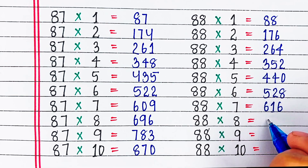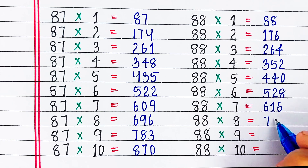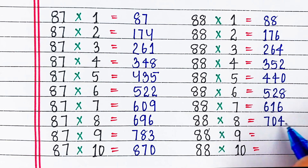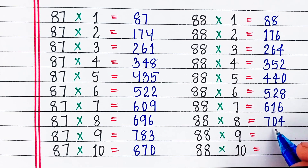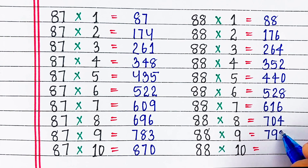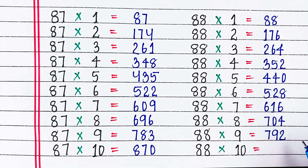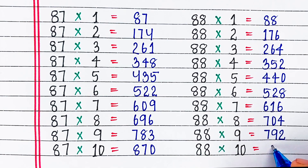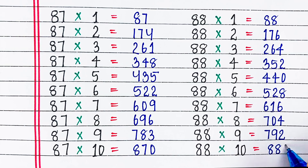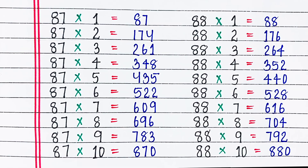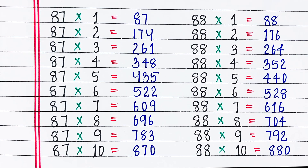88 6s are 528, 88 7s are 616, 88 8s are 704, 88 9s are 792, 88 10s are 880.